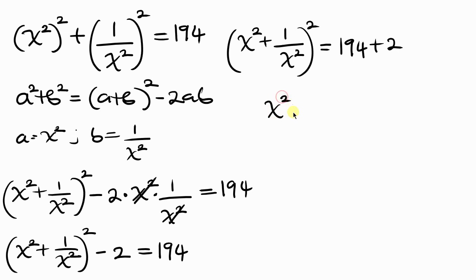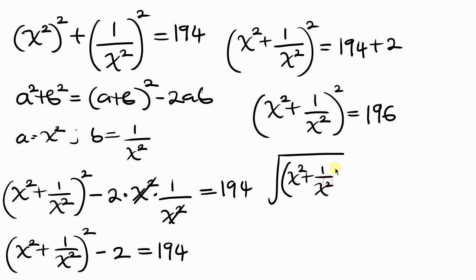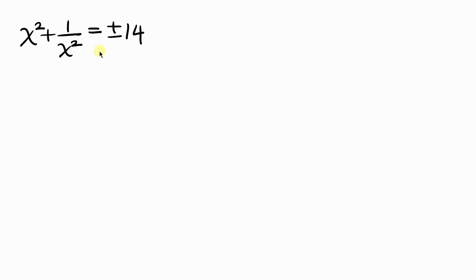To get rid of the square, we take the square root of both sides: the square root of x squared plus 1 over x squared, all raised to the power of 2, equals plus or minus the square root of 196. The square root cancels the square, giving x squared plus 1 over x squared equals plus or minus 14.